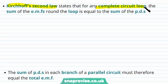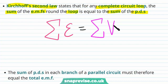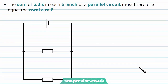Kirchhoff's second law states that for any complete circuit loop, the sum of the EMFs around the loop is equal to the sum of the potential differences. So the sum of the EMFs around a closed loop is equal to the sum of the potential differences of the components in that closed loop. This means we can treat each loop in our parallel circuit separately as one series circuit.